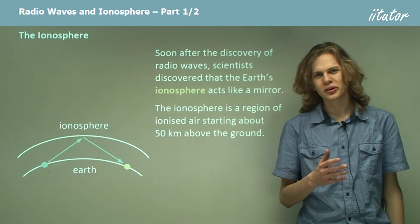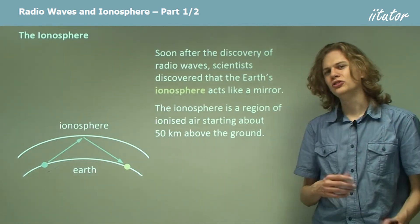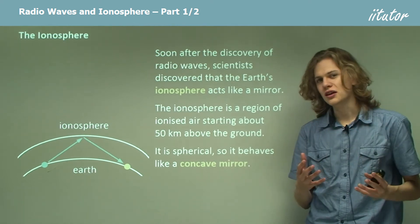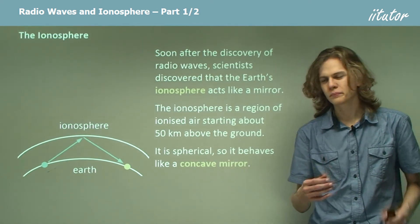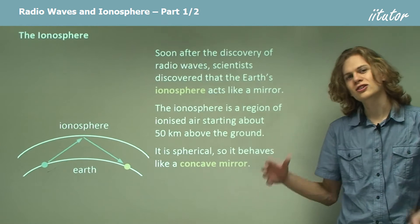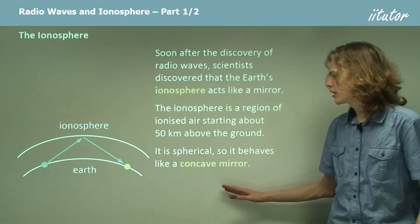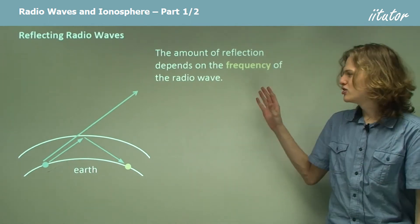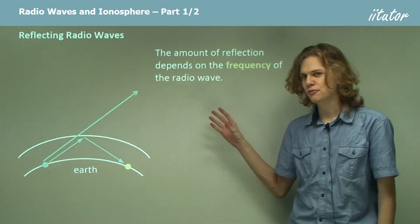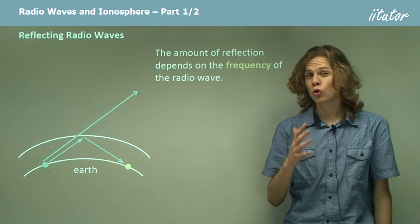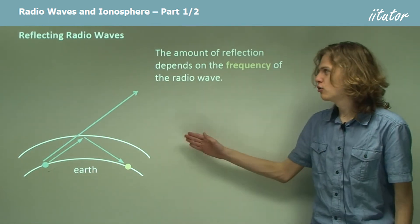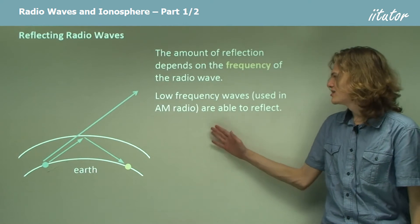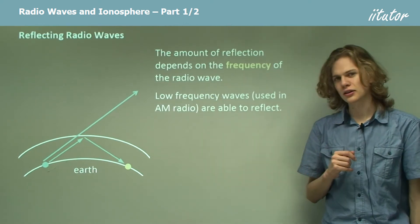But that's not really addressing the ionosphere's effect on radio waves. For radio waves, it behaves a little like a mirror. From our viewpoint on Earth it curves inward, so it behaves like a concave mirror. The amount of reflection we get depends on the frequency of the wave, which means that not all radio waves are able to reflect from the ionosphere. Low frequency waves — that is, AM radio — are able to reflect.